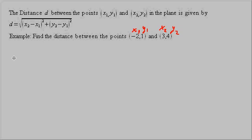So we have d equals x₂, which is 3, minus x₁, which is negative 2, and that's squared, plus y₂, which is 4, minus y₁, which is 1, and that's squared, and we take the square root of all of that.